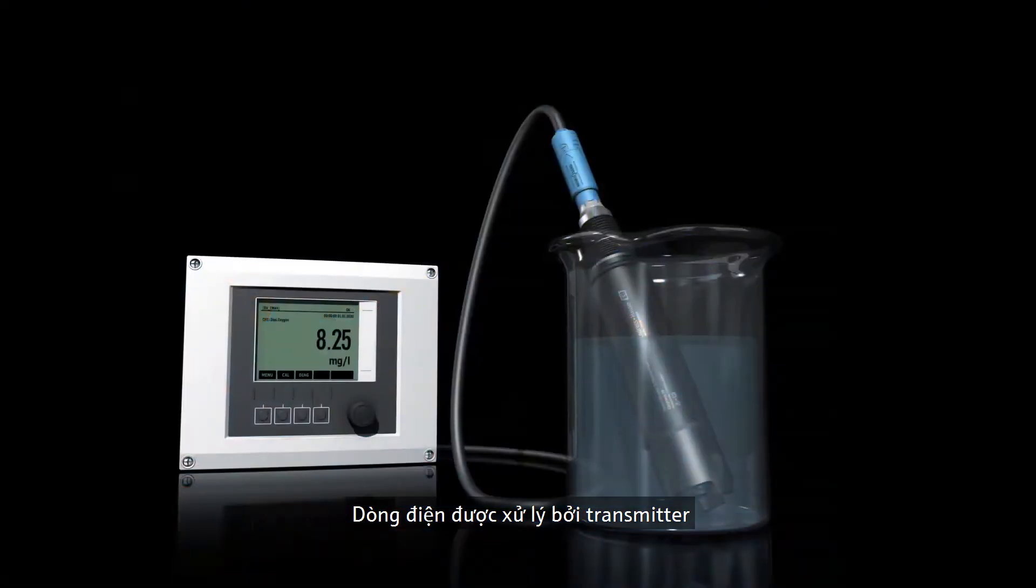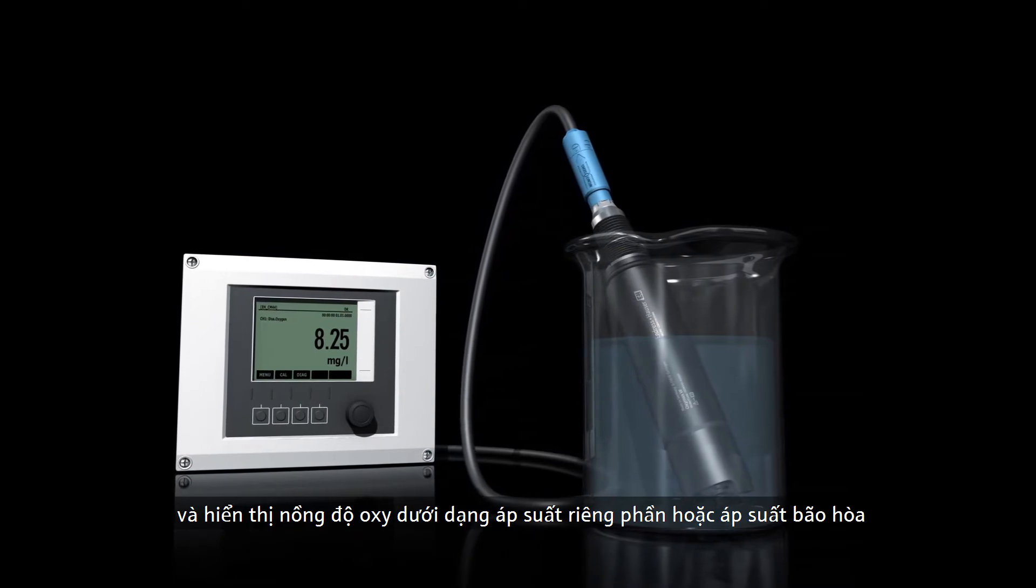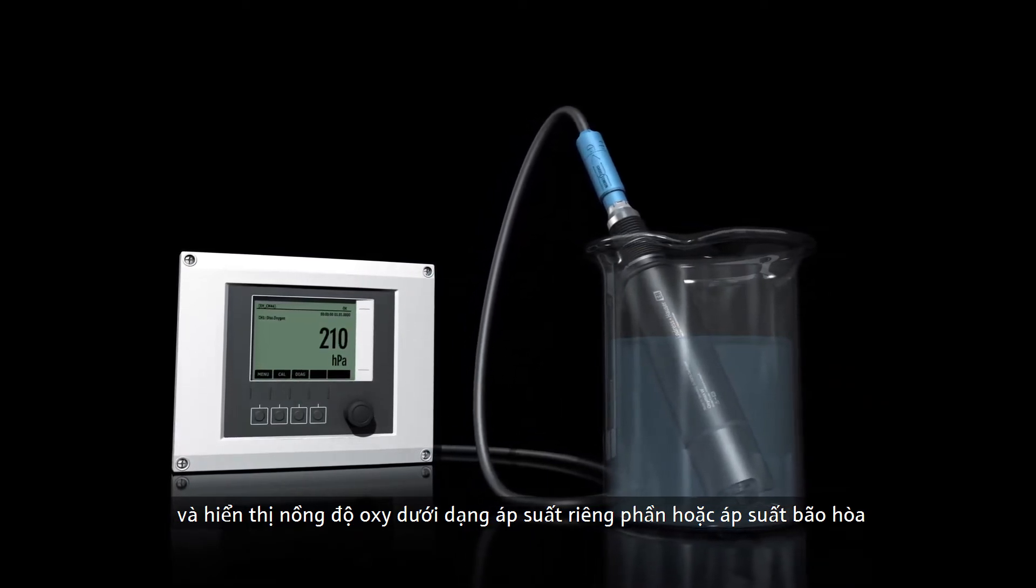The current is processed by the transmitter and displayed as oxygen concentration, partial pressure, or percentage saturation.